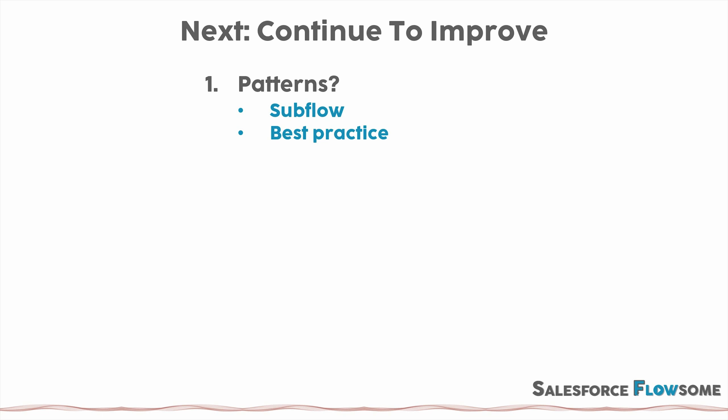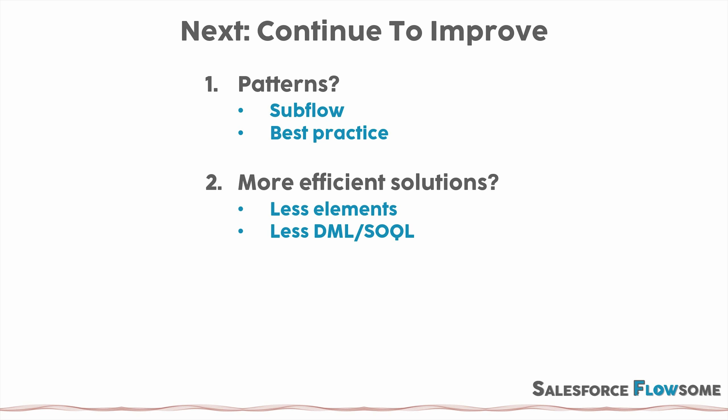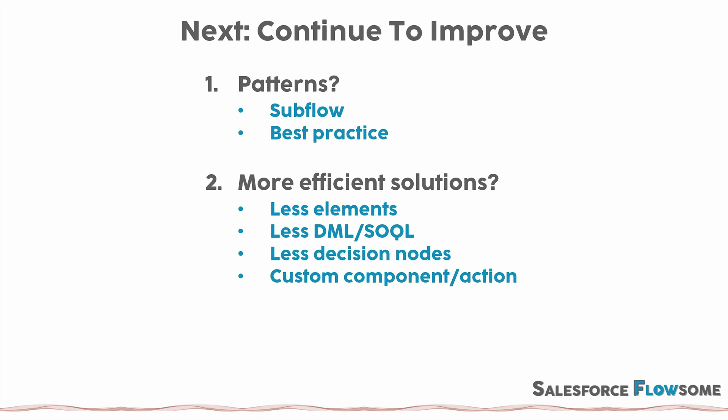Also, if there are any patterns, you can ask yourself: is that the best practice? By asking these kinds of questions, you will discover quickly that there's a certain set of procedures that show up again and again in your flow. Once you're familiar with all those patterns, building flow becomes a lot easier. The second question you can ask is: is there a way we can build more efficient solutions? That includes: can we use fewer elements? Can we use fewer DML statements or SOQL queries? Can we have fewer decision nodes to make the flow look more concise? Lastly, you can also think about using custom components or actions so your flow becomes more performance-oriented and efficient.